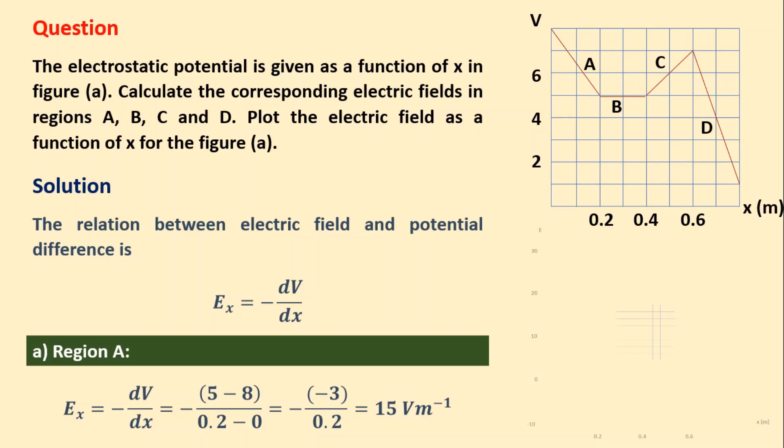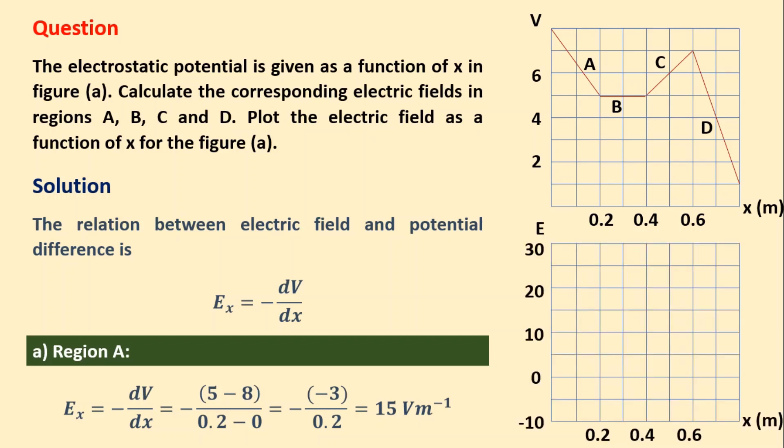Let us work out for region A. In region A, the voltage drops from 8 volts to 5 volts. So the change in voltage will be 5 minus 8, which is minus 3, and it happens within a distance of 0.2 meters. So E_x equals minus (minus 3) divided by 0.2, which gives 15 volts per meter. Let us represent this electric field in a graph versus distance.